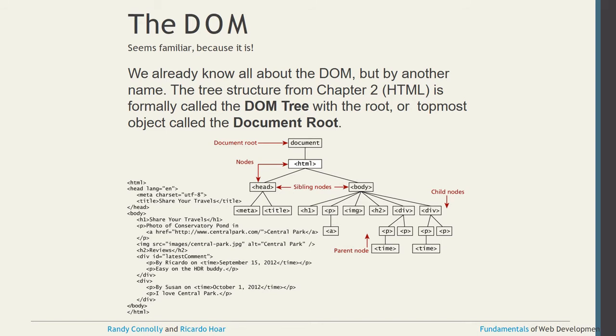The DOM was already discussed in a previous module. The DOM tree starts with the document root, then nodes, then sibling nodes, and then child nodes below those. For example: document → html → head and body (siblings). Under head: meta tag and title. Under body: h1, p, img, and other HTML child elements. From bottom to top are child nodes; from top to bottom are parent and child nodes.